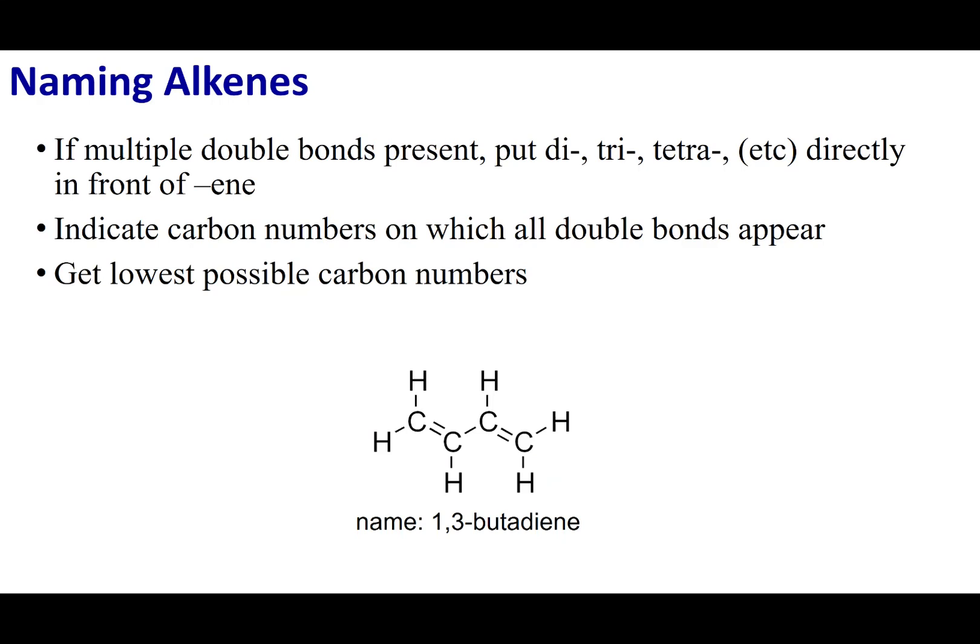If there are multiple double bonds present, you can put di, tri, and tetra directly in front of the E-N-E suffix. Again, you have to indicate where each one of those double bonds appear and make sure you label it with the lowest numbers possible. Also, remember, you only have to label the first carbon in the double bond. You don't have to label both carbons in the double bond.